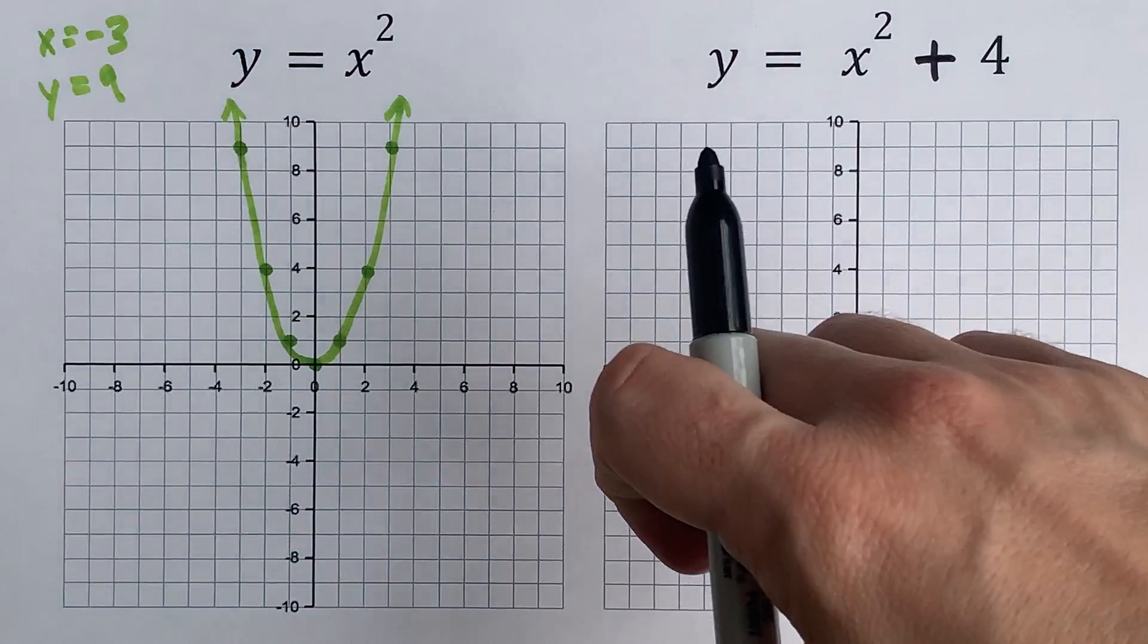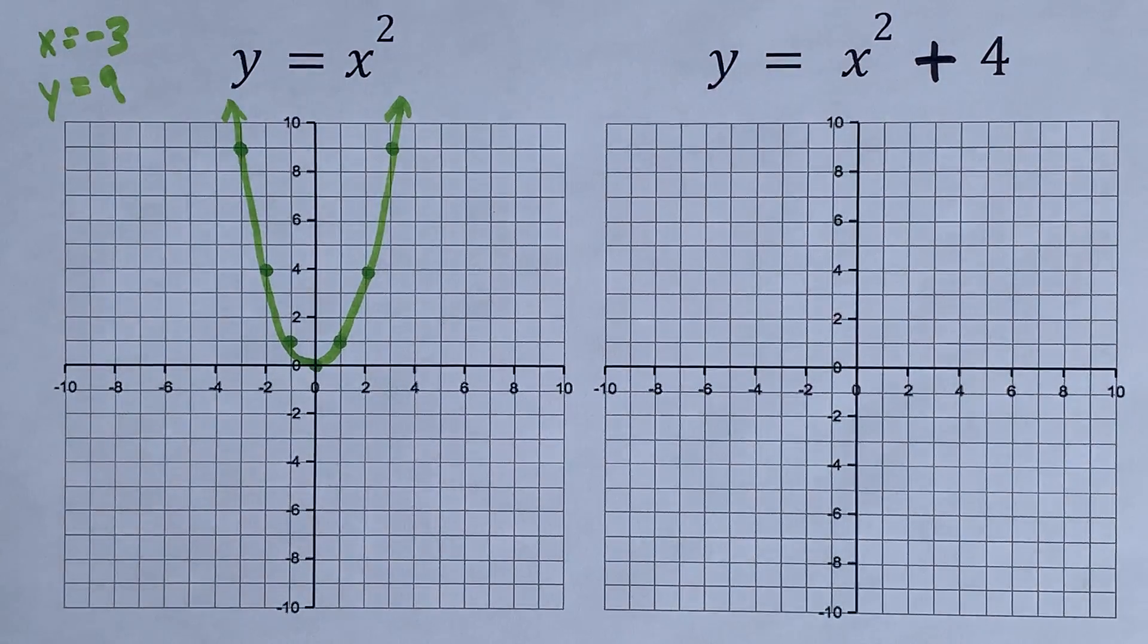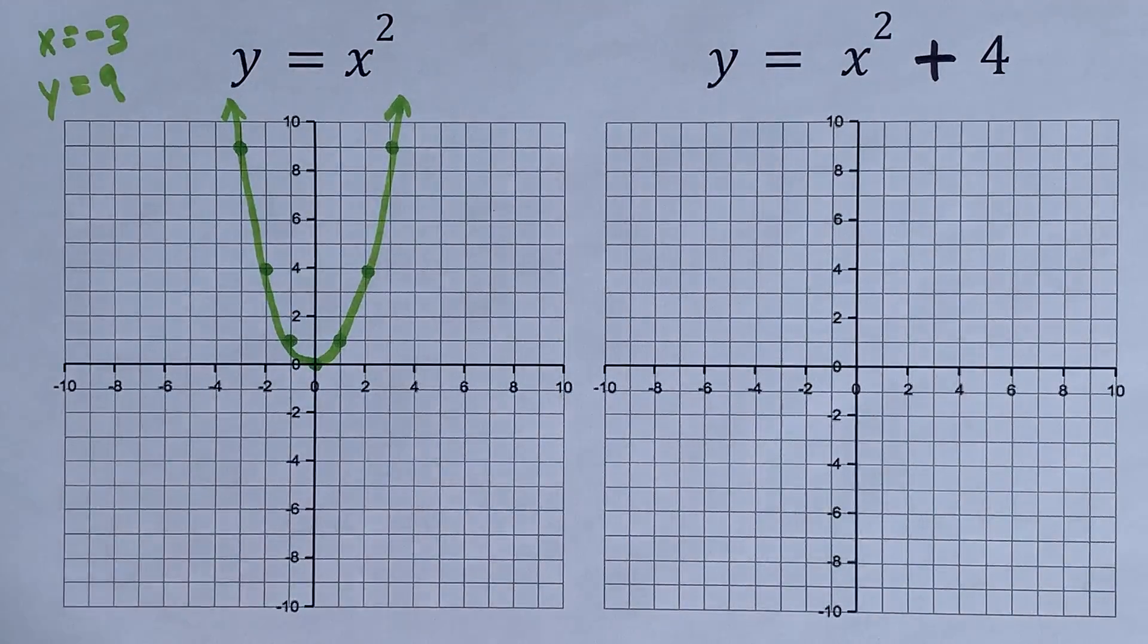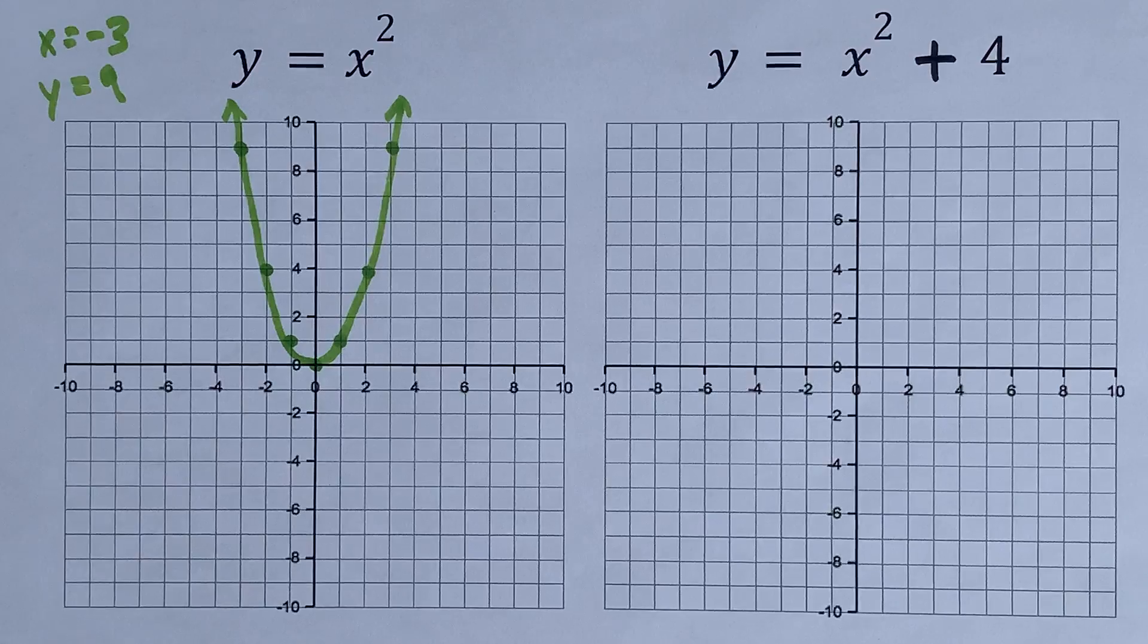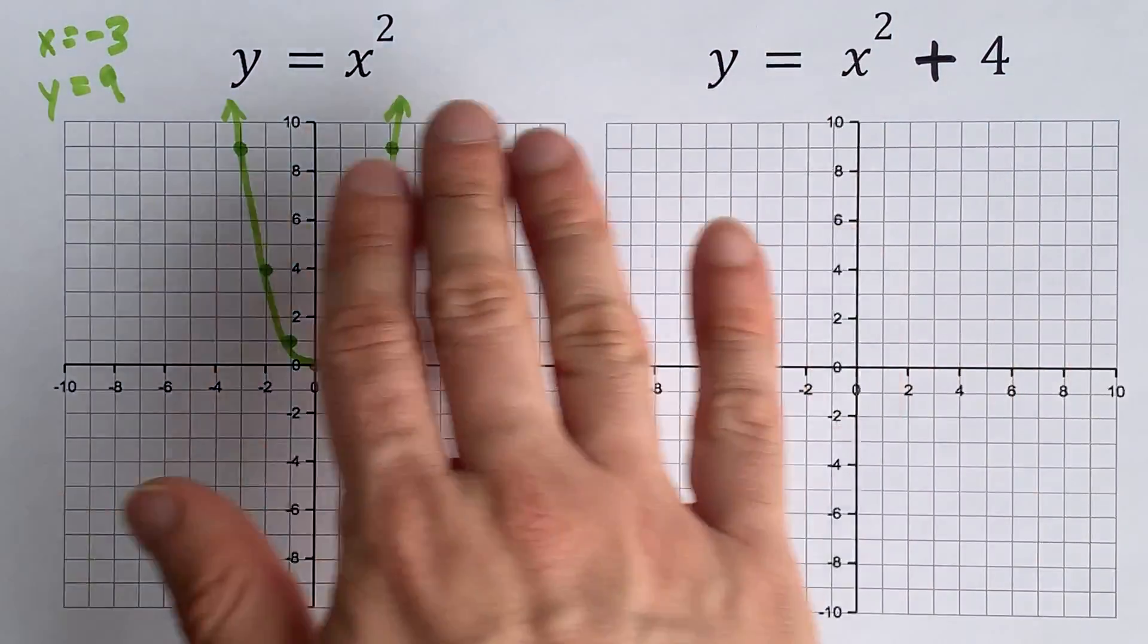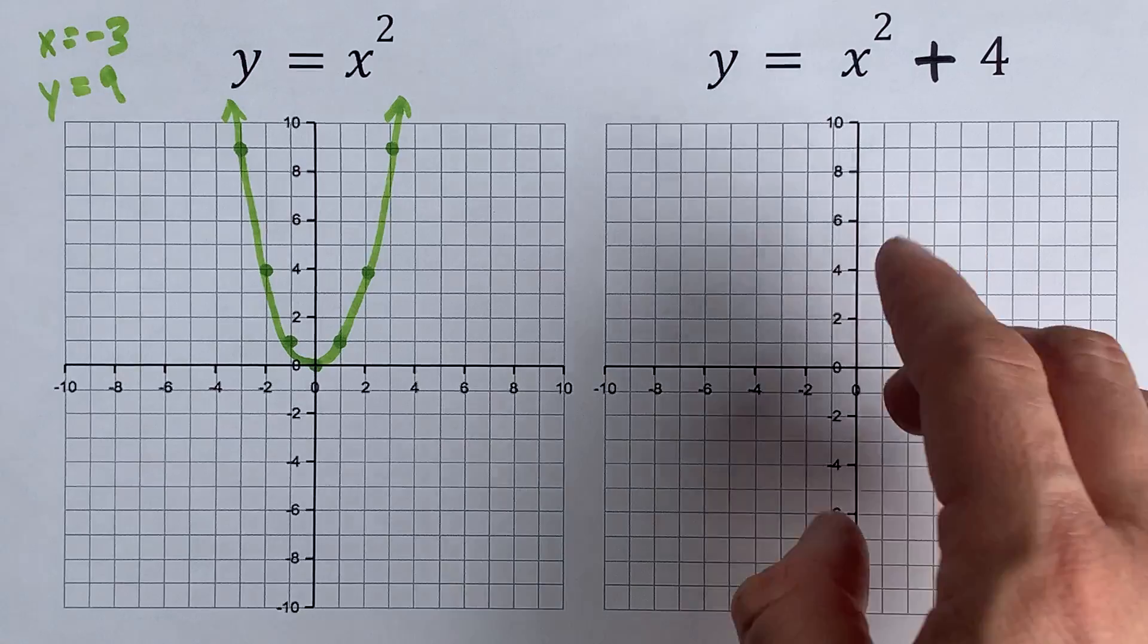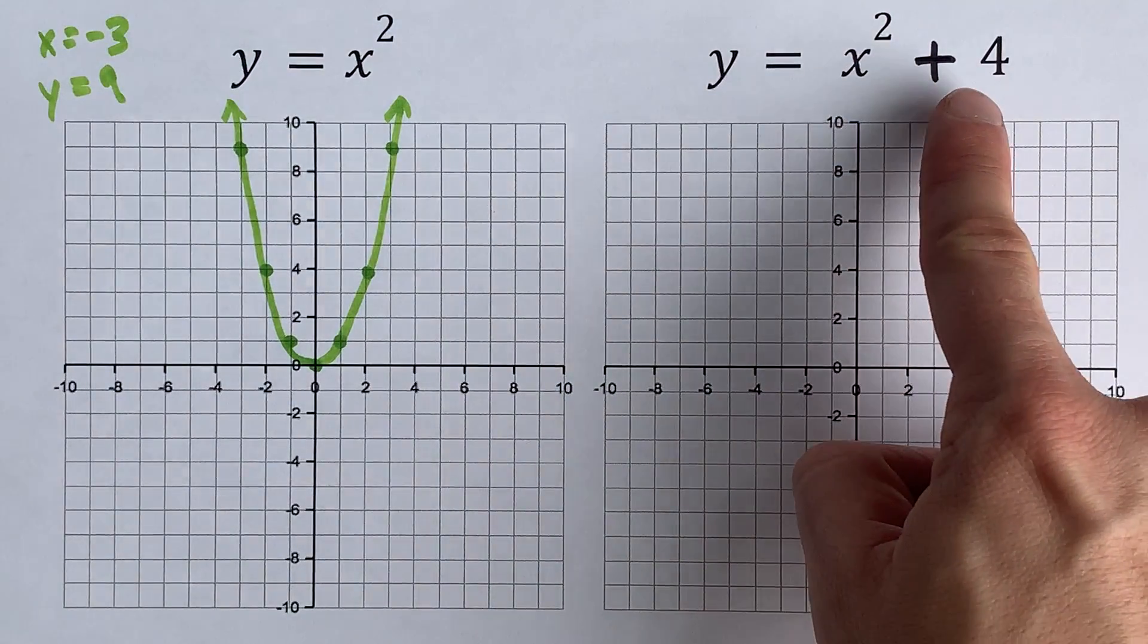We're going to graph y equals x squared plus 4, and on the left here I have the graph of y equals x squared on its own. The difference between these two graphs is that this one has been shifted up 4 units.